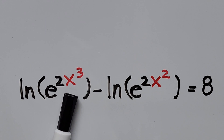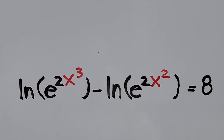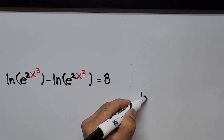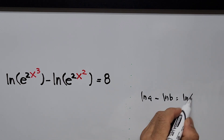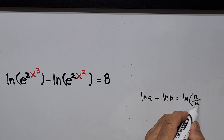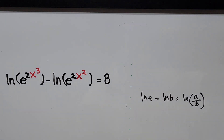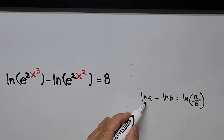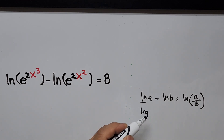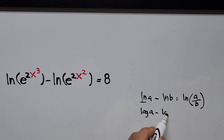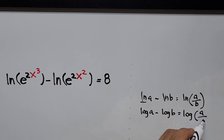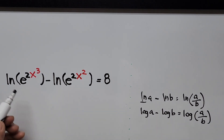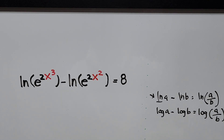Our first step will be using one of the properties of logarithm — the quotient rule. That is: natural logarithm of a minus natural logarithm of b equals natural logarithm of a divided by b. The same applies to common logarithm, just with log instead of ln: logarithm of a minus logarithm of b equals logarithm of a divided by b.